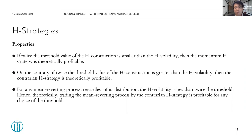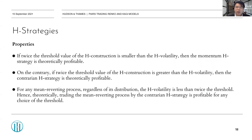The last and most important property is that for any mean reverting process, regardless of its distribution, the edge volatility is less than twice the threshold value. Hence, theoretically, trading a mean reverting process using the contrarian edge strategy is profitable for any choice of threshold value. So ideally, as long as we know a process has mean reversion properties, we can use the contrarian edge strategy to profit.